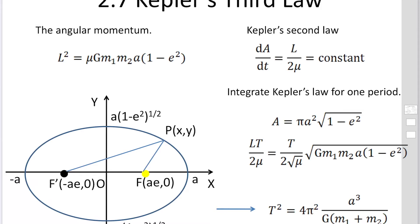So in the last lecture, we have learned that R is expressed L² over μGm₁m₂ over 1 plus e cos θ.